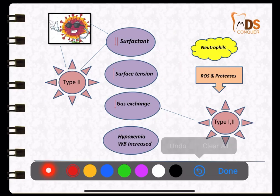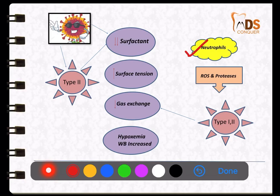After the cytokines are released, they attract neutrophils to the site. These neutrophils release reactive oxygen species and proteases, which again damage both type 1 and type 2 pneumocytes. As type 1 pneumocytes are responsible for gaseous exchange, the gaseous exchange is further affected, causing hypoxemia. This is the simple pathogenesis of how type 2 and type 1 pneumocytes are damaged, resulting in the collapse of the alveolus.